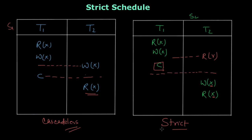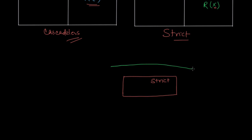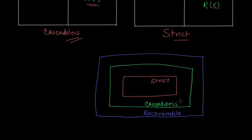Now let's understand the correlation between strict schedules, cascadeless, and recoverable. In strict schedule we don't allow read or write. Cascadeless is a superset of strict, because in cascadeless we allow write operation before commit. And all cascadeless schedules are recoverable. So strict schedules are cascadeless, and cascadeless schedules are recoverable — meaning all strict schedules are recoverable and all cascadeless schedules are recoverable.